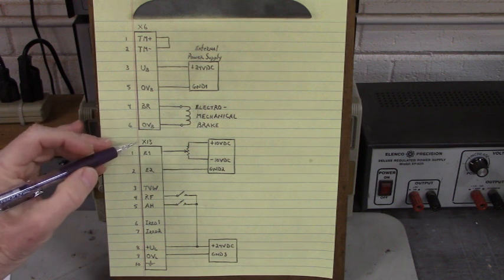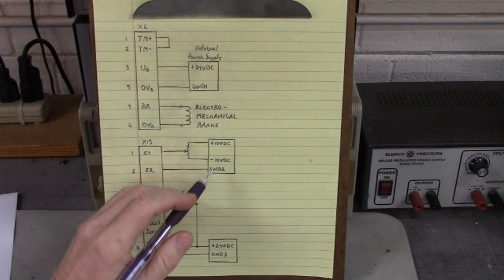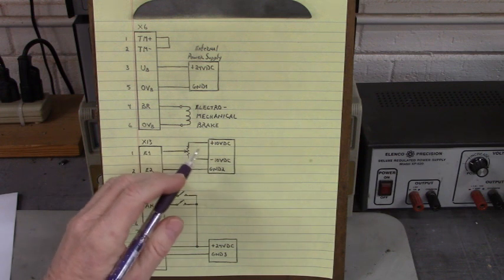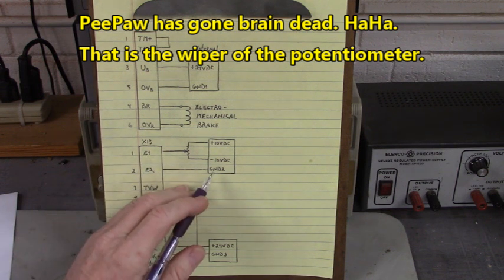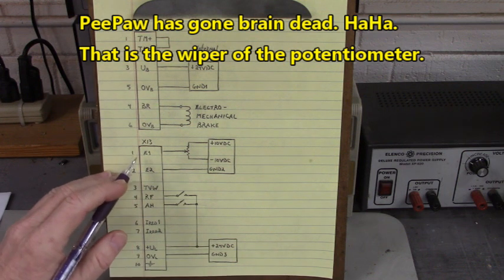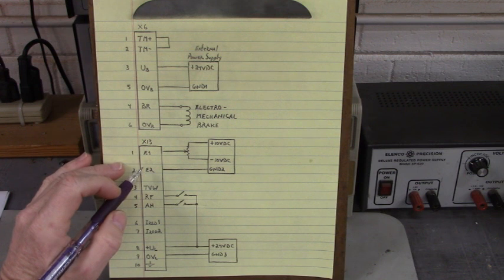Down here on the X13 connector we have a plus or minus 10 volt power supply. A potentiometer, and the wiper of the potentiometer goes to the E1 terminal, and the ground of this power supply goes to the E2 terminal. That determines the speed and direction of the motor.